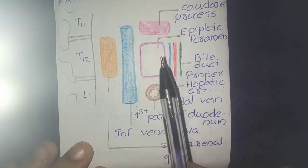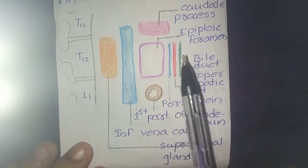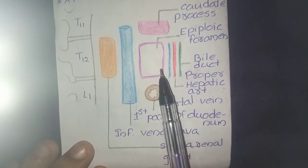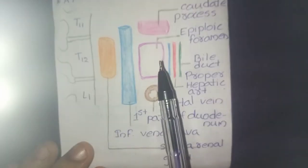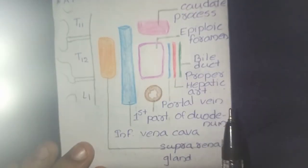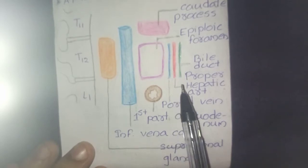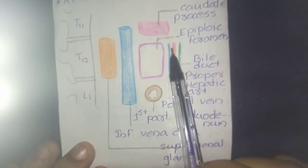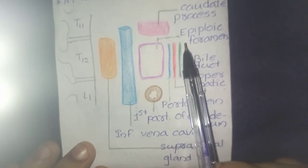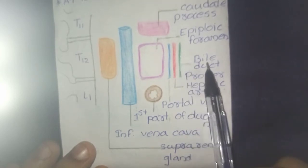Now for the boundaries of the Epiploic Foramen. Anteriorly it is by the free margin of the lesser omentum which contains the portal vein, this blue marked line, and proper hepatic artery, this red colored, and this green is the bile duct.